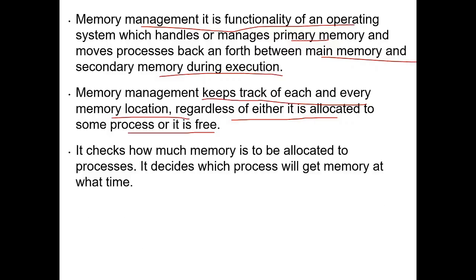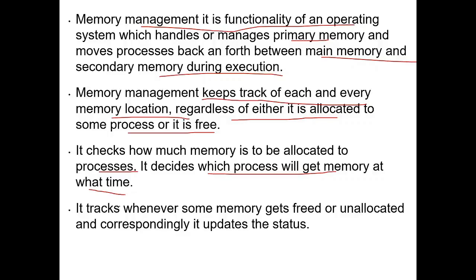Memory management checks how much memory is to be allocated to processes and decides which process will get memory at what time. It also tracks whenever some memory gets freed or unallocated, and correspondingly updates the status — so whenever any process finishes execution and releases memory, how much memory is free and to which process it can be allocated further, and what is the current status.